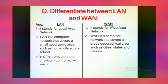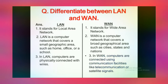The third point in LAN is: computers are physically connected with wires. When we connect computers within a building, we use wires. But in WAN, computers are connected using communication facilities like telecommunication or satellite signals. So WAN can be wireless as well, and in LAN we use wires. This is the difference between LAN and WAN.